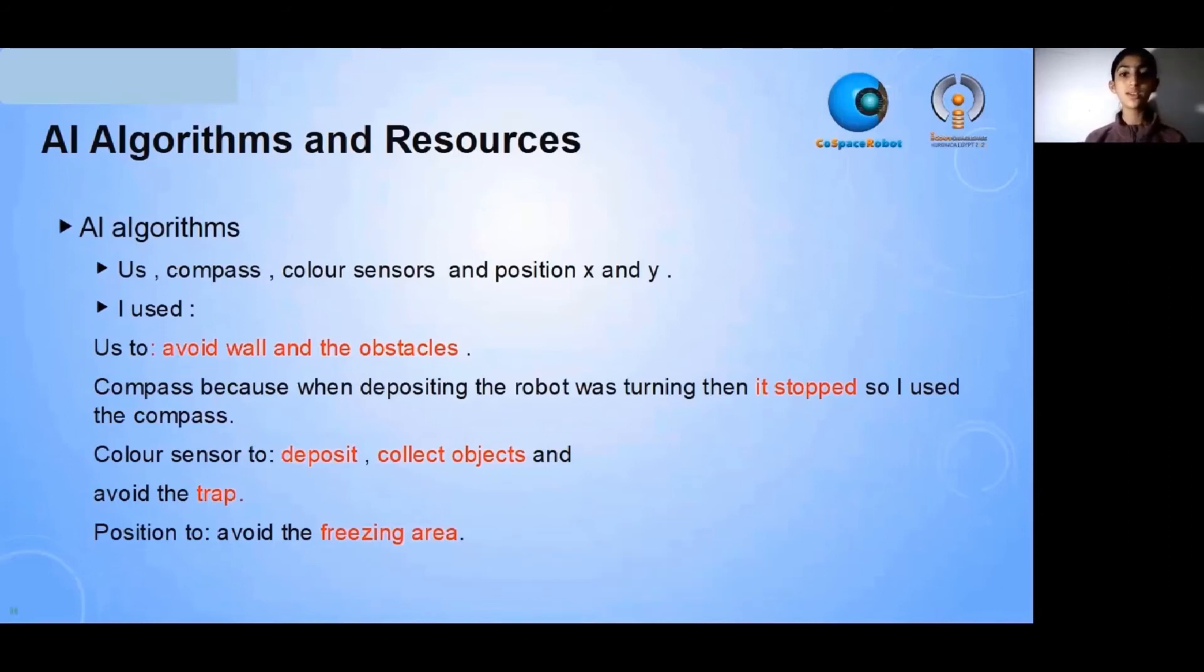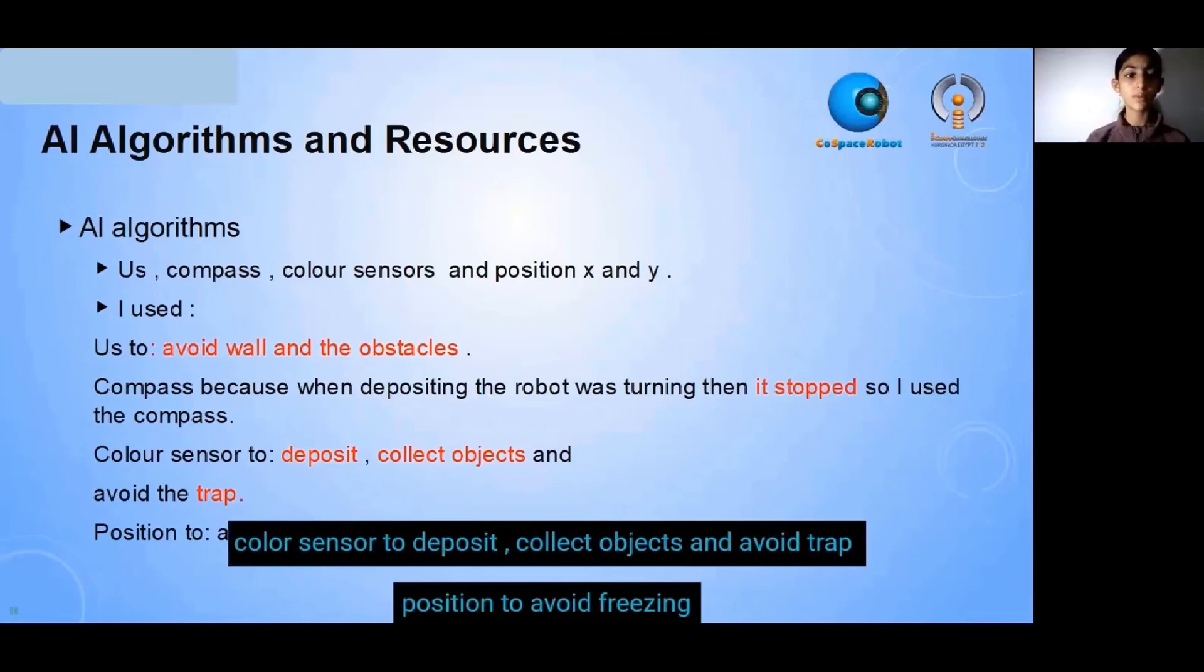Compass because when depositing the robot was turning, then it stopped. So I used the compass. Color sensor to deposit, collect objects, and avoid the trap. Position to avoid the freezing area.